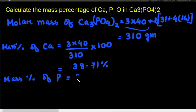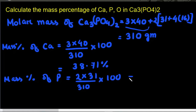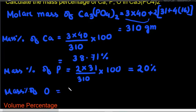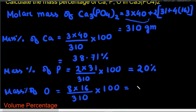Next, mass percentage of phosphorus: since there are 2 phosphorus atoms, we multiply 2 into 31 — that is the molar mass of phosphorus — divided by the molar mass of calcium phosphate, into 100. So it is equal to 20%. And at last, mass percentage of oxygen: since there are 8 oxygen atoms, we multiply 8 into 16, divided by 310, into 100, which is equal to 41.29%.